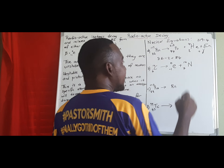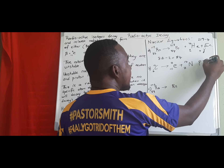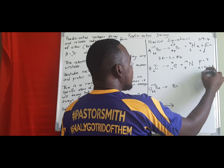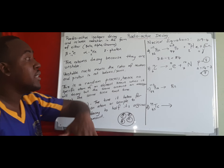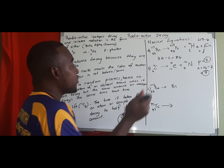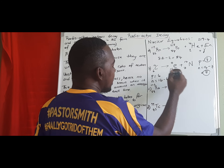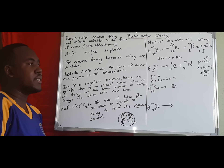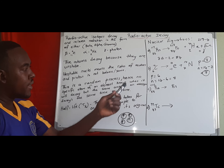Element with atomic number 7 is nitrogen. Now let's check stability: the daughter atom nitrogen has 7 protons and the neutron count is 14 minus 7, which is also 7 — so both numbers are equal and this nitrogen atom is stable and will not decay further. The original carbon was unstable because it had 6 protons and 14 minus 6 equals 8 neutrons — unequal, so it decayed into stable nitrogen.